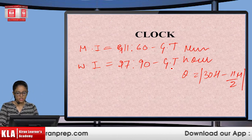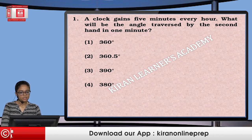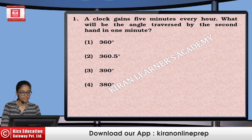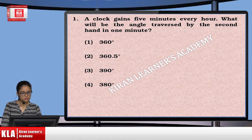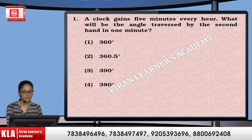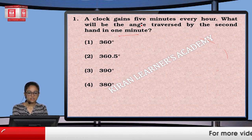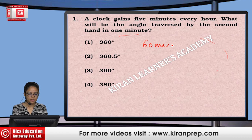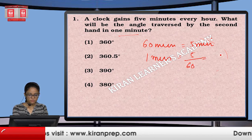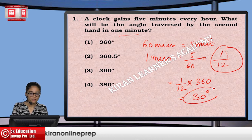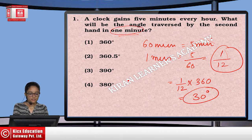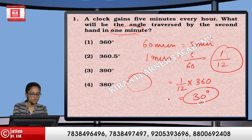These are three things to keep in mind while doing clock questions. Problem: A clock gains 5 minutes every hour. What will be the angle traversed by the second hand in 1 minute? The second hand covers 360 degrees in 1 minute. Since it gains 5 minutes every 60 minutes, in 1 minute it gains 1/12th of a minute, which means 1/12th of 360 degrees, that is 30 degrees extra. So the total is 390 degrees.